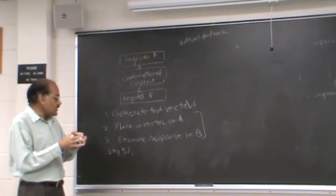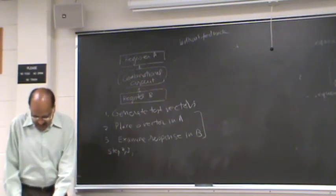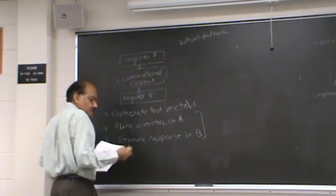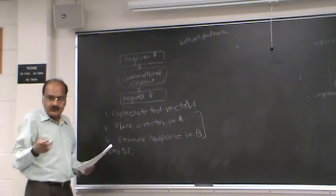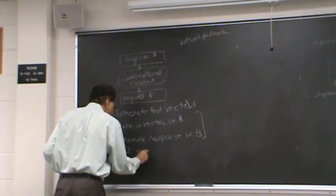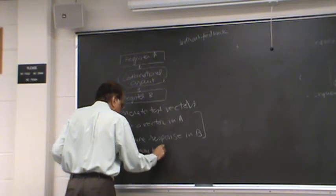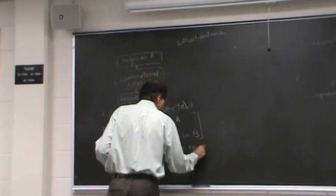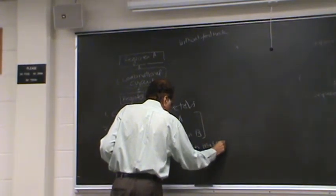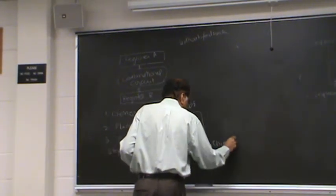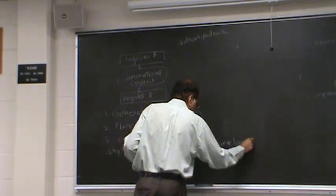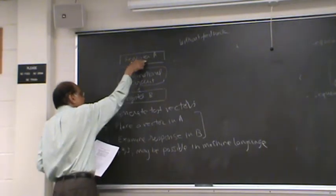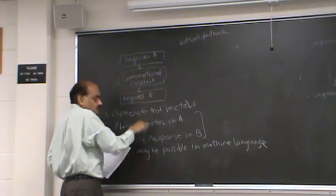So within a processing unit, you have this block that you want to test. And it is possible that steps 2 and 3, you may be able to do it using machine language. You basically write a program and the program will put something in this register and then take a look at the response.